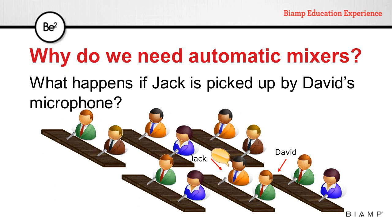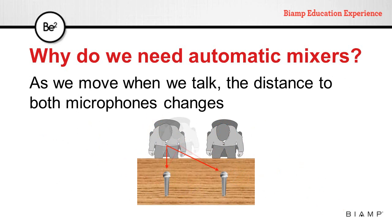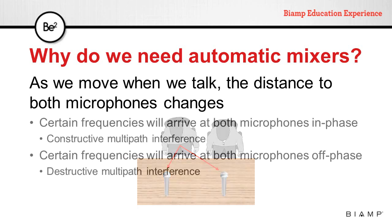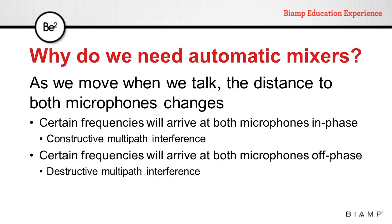Lastly, in this scenario, what happens if Jack is picked up by David's microphone? As we talk, we tend to move side to side or turn our heads, which constantly changes the distance to both microphones. Certain frequencies will arrive at both microphones in phase, creating constructive multipath interference.